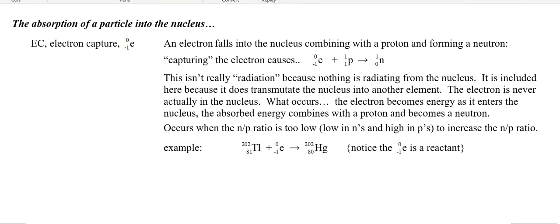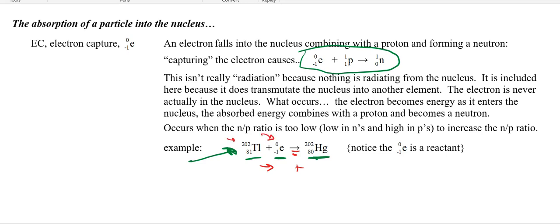The last one, electron capture, is that weird one — it's not really radiation. Nothing's coming out of the nucleus; the electron falls into the nucleus and gets converted into energy to react with the proton. The net result is the opposite of beta decay: an electron and a proton make a neutron. In the example, you've got a nucleus plus an electron yielding another nucleus. It looks a lot like beta decay except the electron is a reactant — this is the only one where you have two reactants. The equal sign is on the product side. 81 minus 1 is 80 — that would be mercury, so thallium turns into mercury with no change in atomic mass.